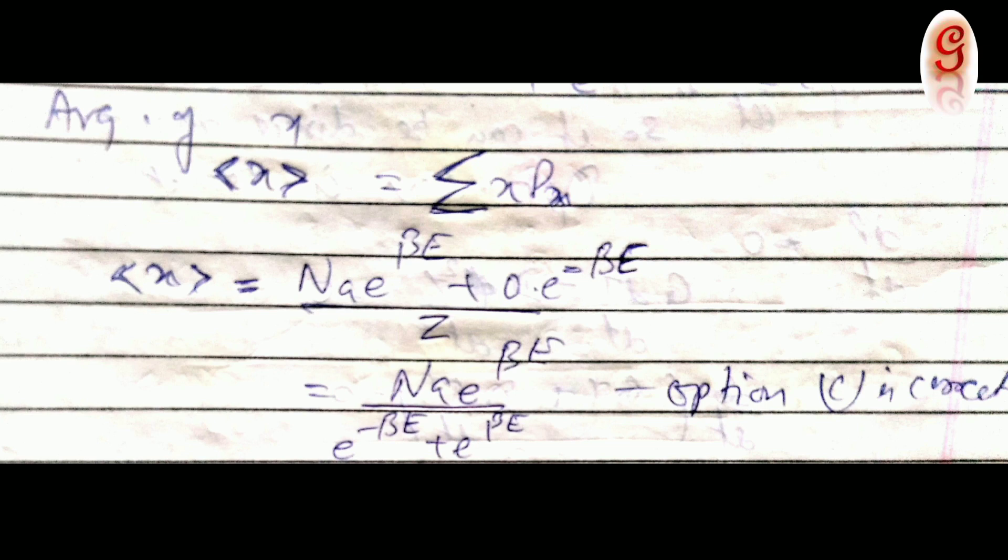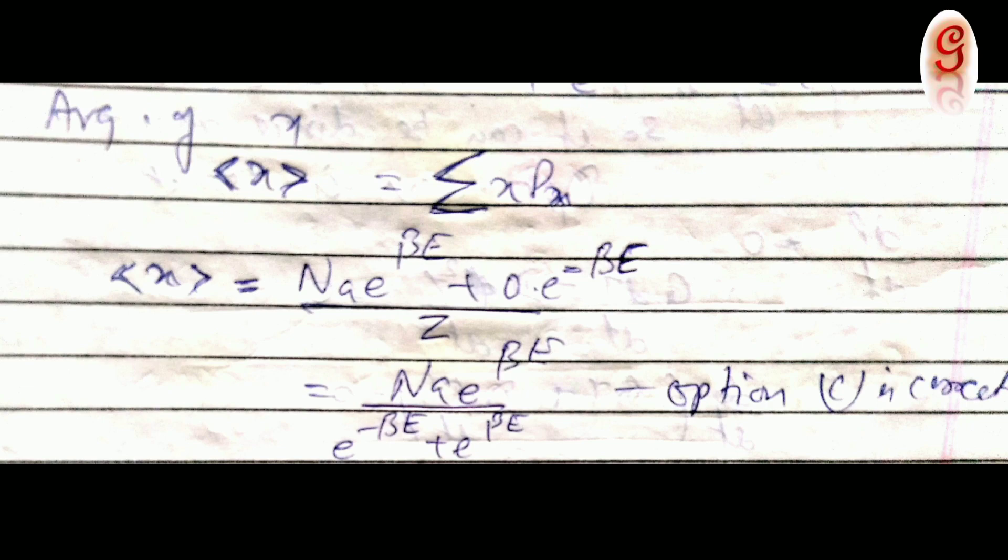So what we get is expectation of X equals nA times e raised to the power of beta E upon e raised to the power of minus beta E plus e raised to the power of plus beta E. That is, option C is the correct answer. Thank you friends.